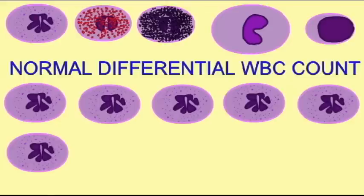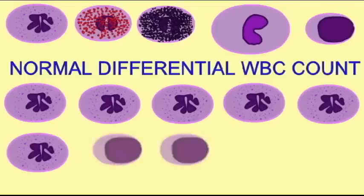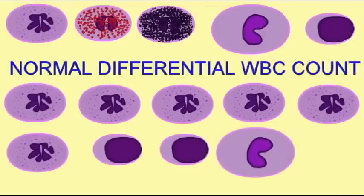Monocytes are the third most common white blood cell, composing 10 to 15 percent of circulating white blood cells. Their numbers can be increased in viral or fungal infections, tuberculosis, mono, and some leukemias.